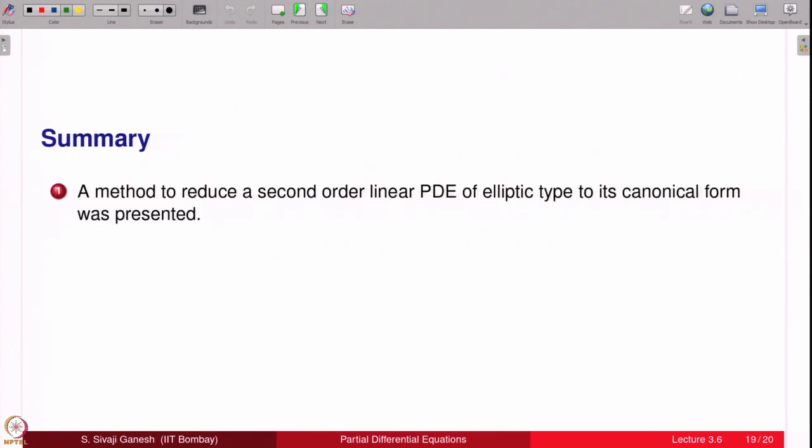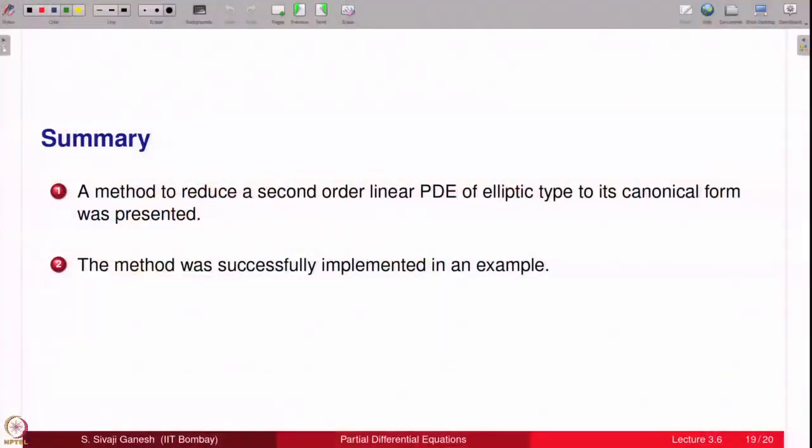Summarizing what we did: we have presented a method to reduce a second order linear PDE which is of elliptic type to its canonical form. We have of course assumed very high assumptions on the coefficients a, b, c. But you may generally, if you are given a partial differential equation of elliptic type and you want to find its canonical form, simply follow the procedure. Do not bother about the hypothesis checking for the theorem, and you will still be successful, if you are able to solve the ODEs which are coming on the way. We have seen the method is successfully implemented in the example.